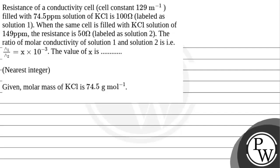Hello students, next question. The question says resistance of a conductivity cell with cell constant 129 m⁻¹ filled with 74.5 ppm solution of KCl is 100Ω labeled as solution 1. When this same cell is filled with KCl solution of 149 ppm, the resistance is 50Ω labeled as solution 2.